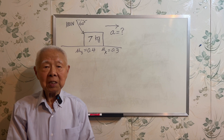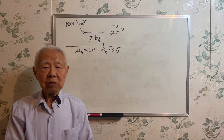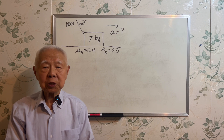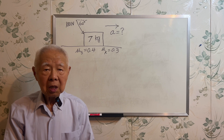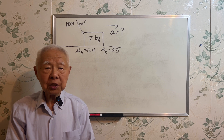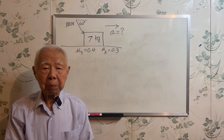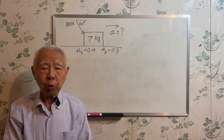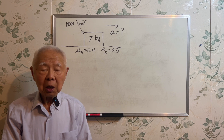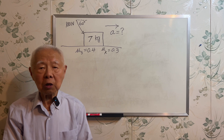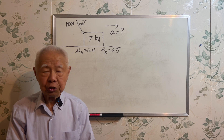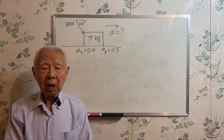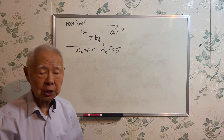Hello everybody. This is a physics problem. I have a box on a table and there is a force pushing the box. The magnitude is 100 Newtons and the direction is pointing below the horizontal by an angle of 60 degrees. This is the diagram of the situation.